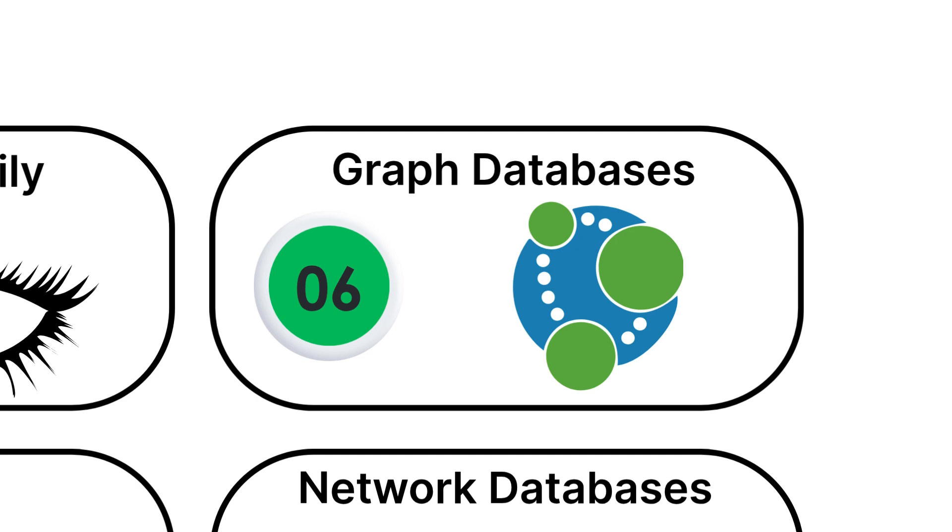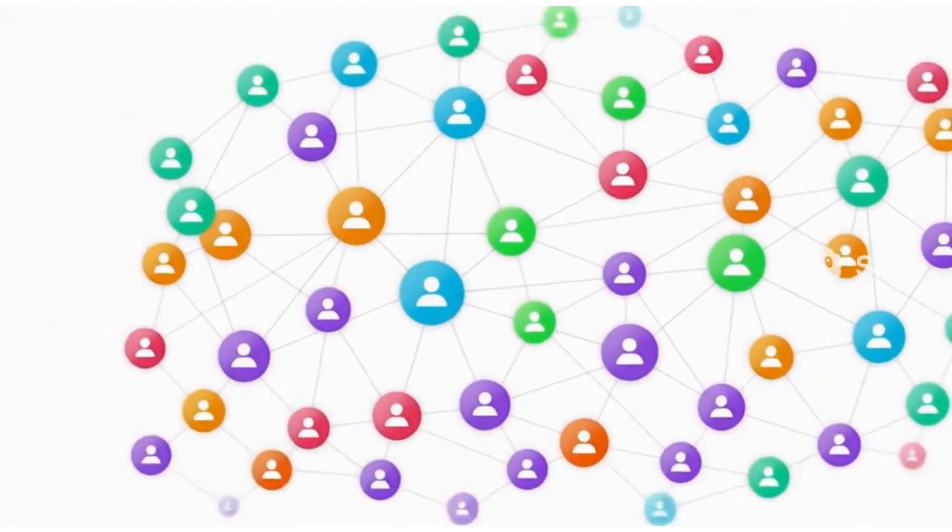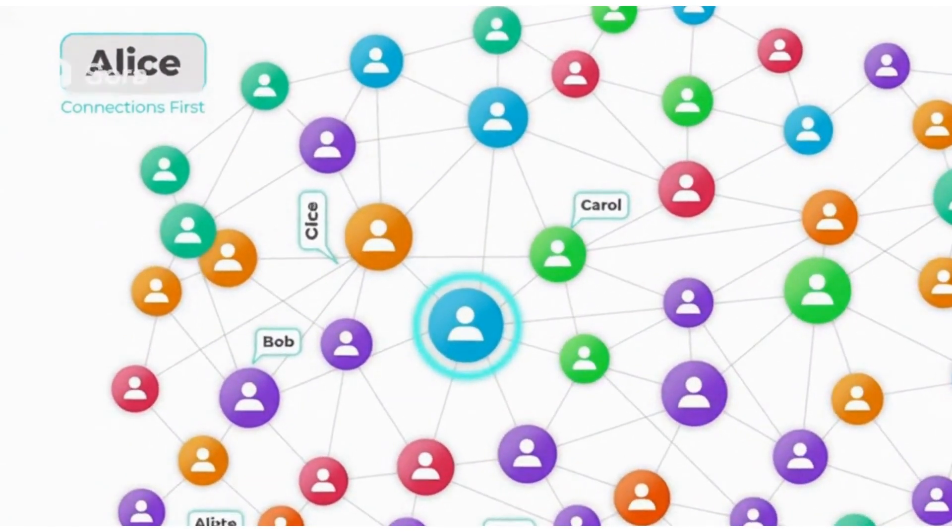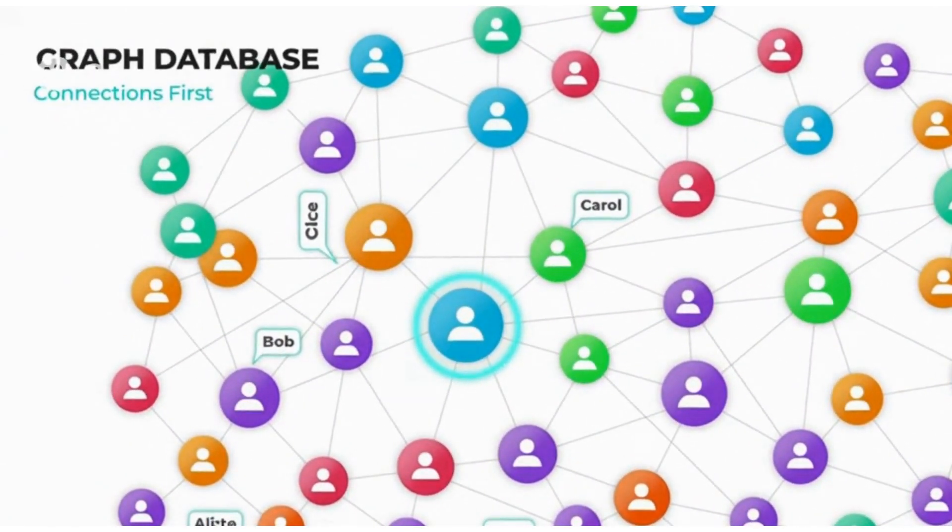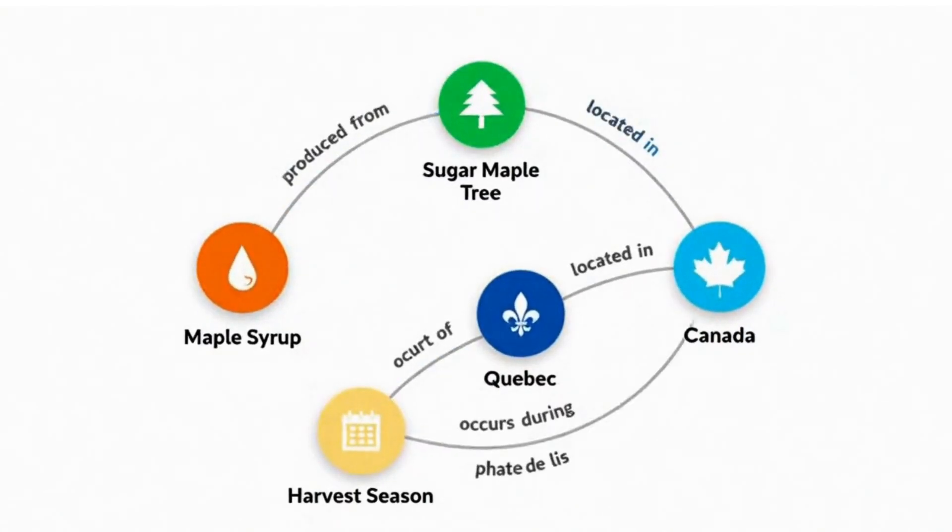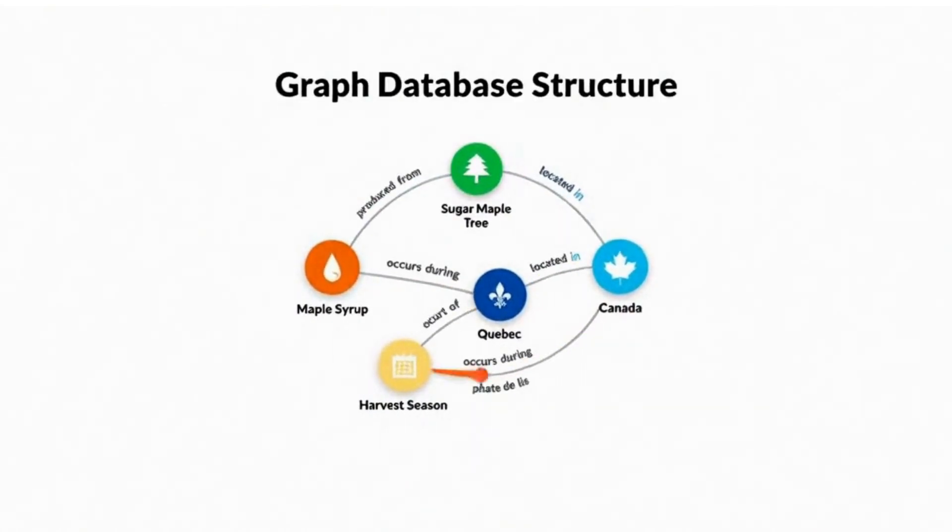Number six, Graph Databases. Graph databases are all about relationships and connections. Think of them like a social network map where you can see how everyone is connected to everyone else. Instead of tables or documents, graph databases store data as nodes, things, and edges, relationships between things.